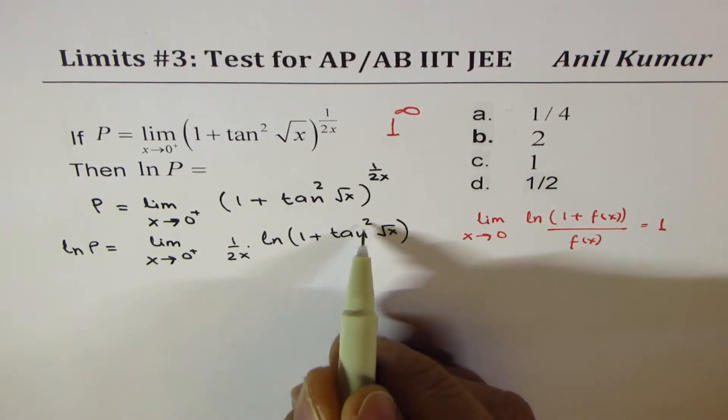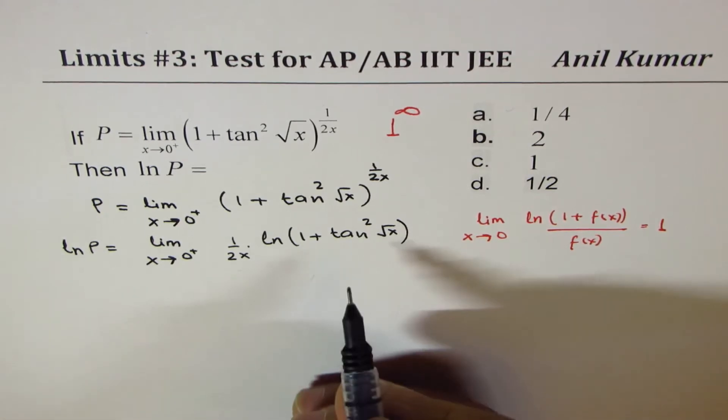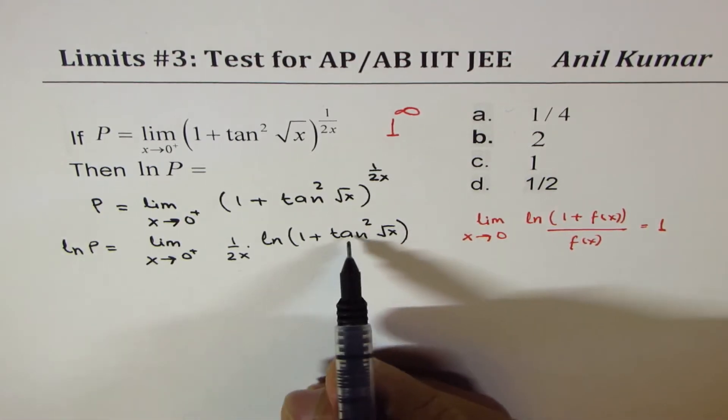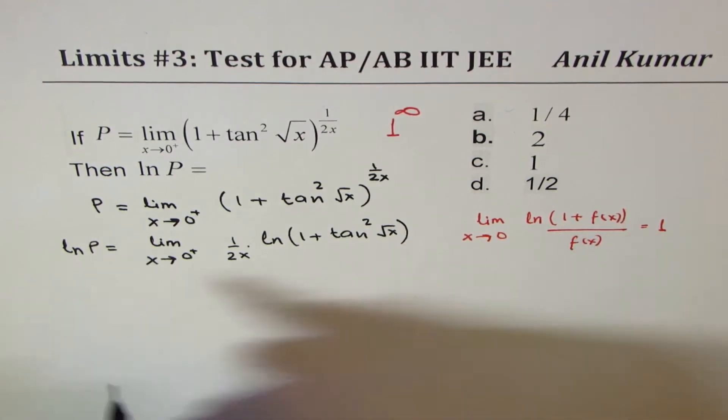So we are given a function tan²√x. So what I will do is, I will multiply and divide by tan²√x to get it in this form.